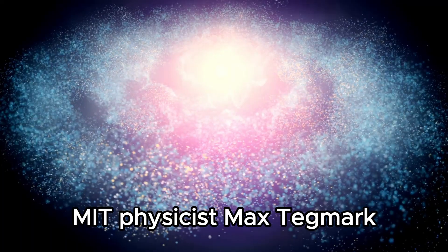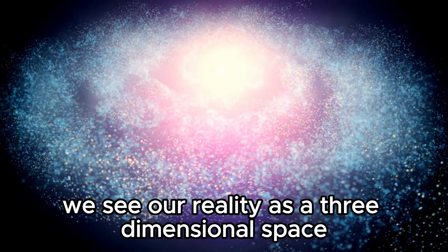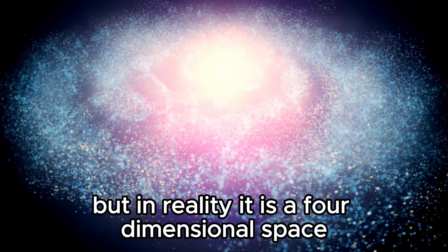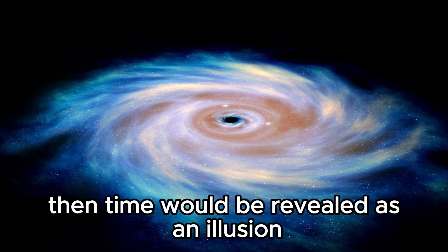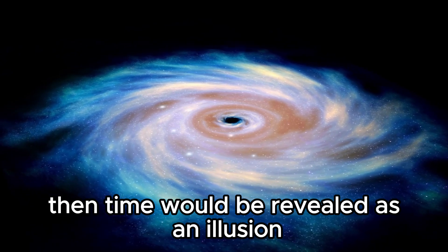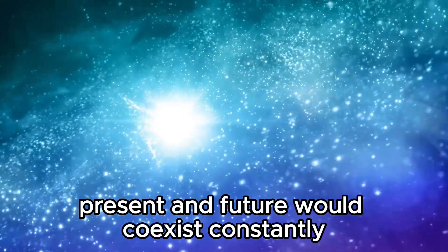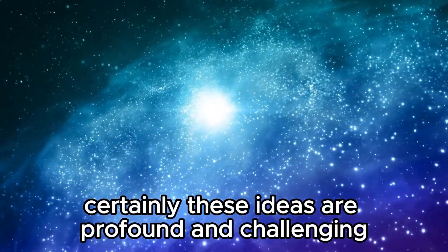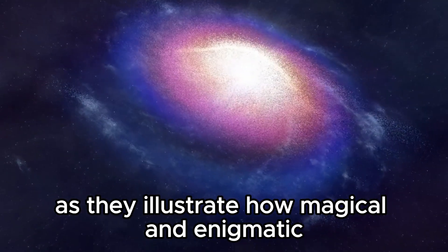MIT physicist Max Tegmark expressed this concept eloquently by describing that we see our reality as a three-dimensional space where events occur in time, but in reality, it is a four-dimensional space where everything just is. If this approach were true, then time would be revealed as an illusion, since nothing would undergo real change. Past, present, and future would coexist constantly. Certainly, these ideas are profound and challenging, but they are fascinating to ponder as they illustrate how magical and enigmatic the universe can be.